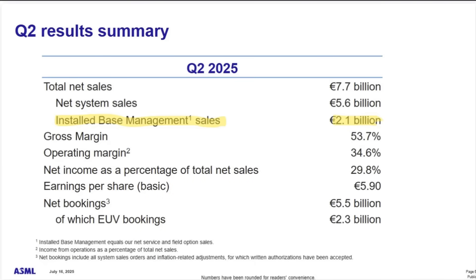Let's get to the Q2 2025 slides from ASML. We always start with the income statement. Total sales: 7.7 billion. Net system sales — the actual sale of lithography equipment — and then installed base management, which is the services and recurring revenue portion. Earnings per share: €5.90. This was overall a pretty good Q2 — most line items ASML exceeded expectations.